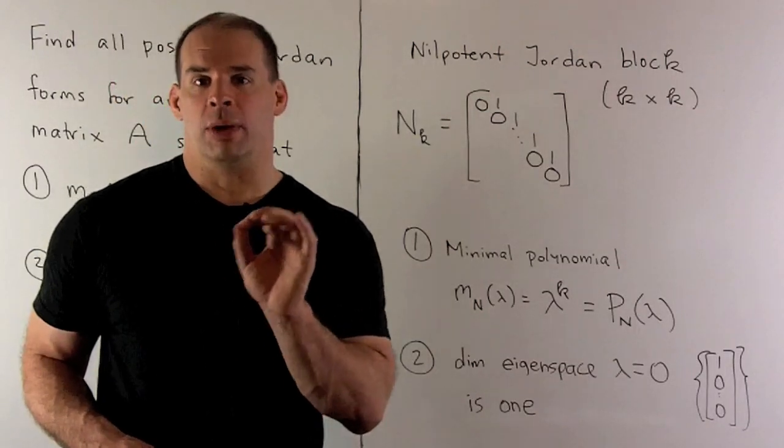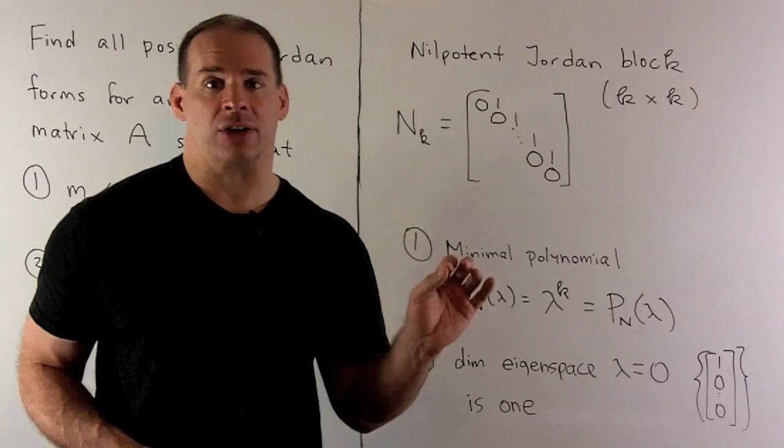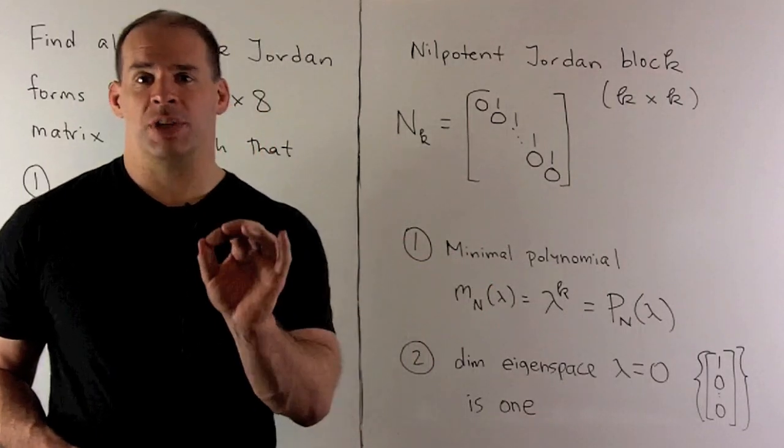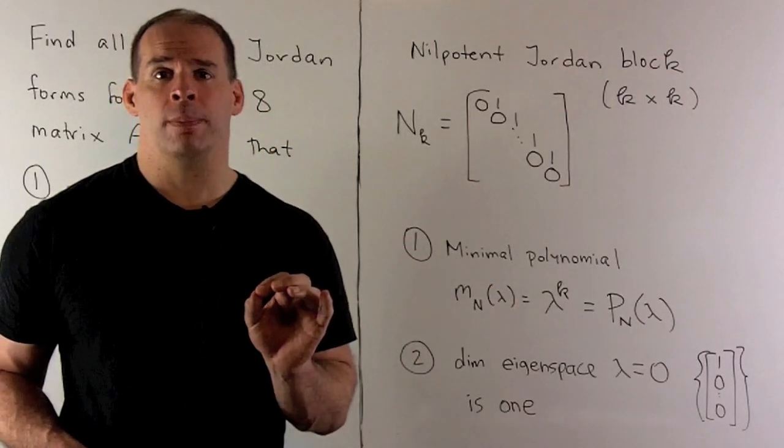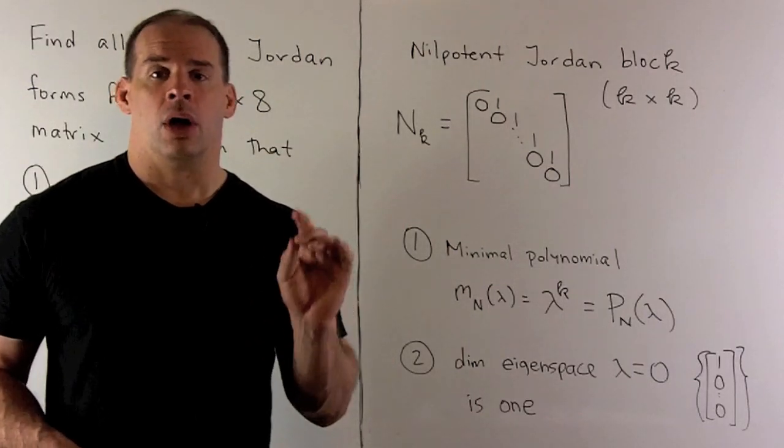If we take the minimal polynomial of a diagonal matrix, it's going to factor into distinct linear factors. So if I go from the characteristic polynomial to the minimal polynomial, we drop all the exponents down to one.